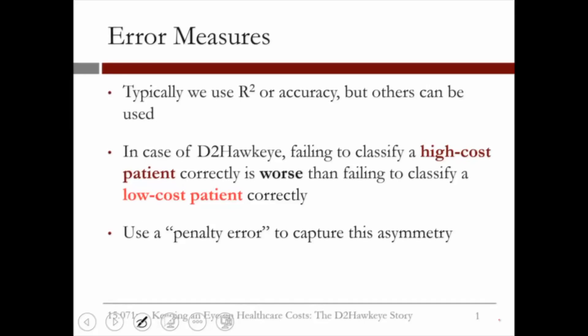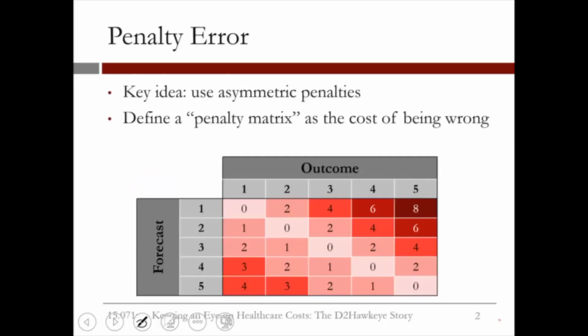The next measure, the so-called penalty error, is motivated by the fact that if you classify a very high risk patient as a low risk patient, this is more costly than the reverse, namely classifying a low risk patient as a very high risk patient. Motivated by this, we developed a penalty error, and the idea is to use asymmetric penalties.